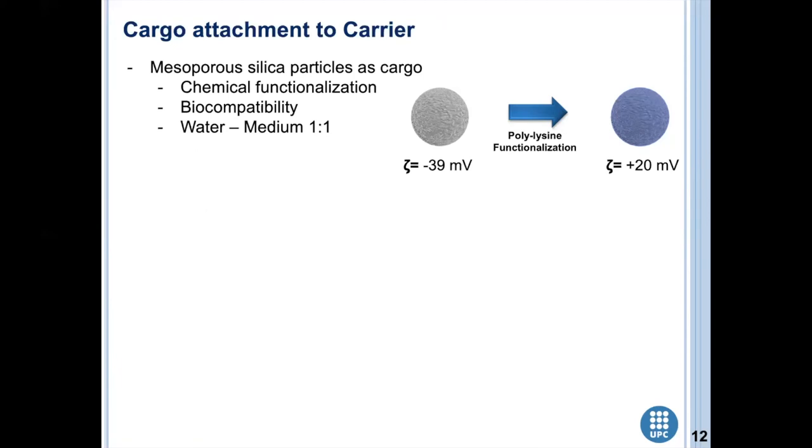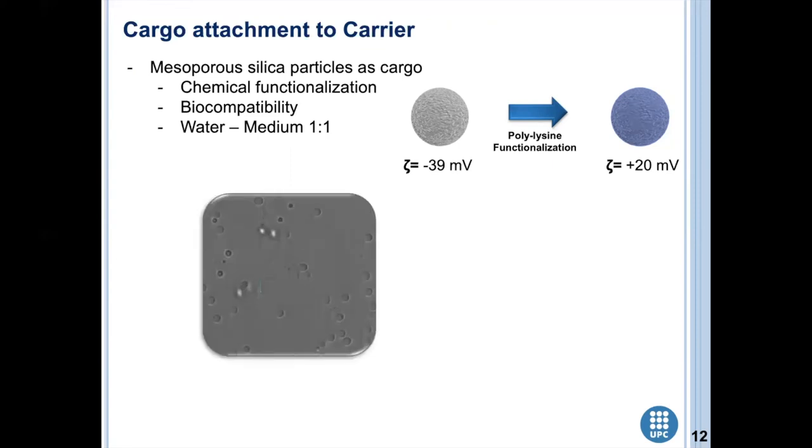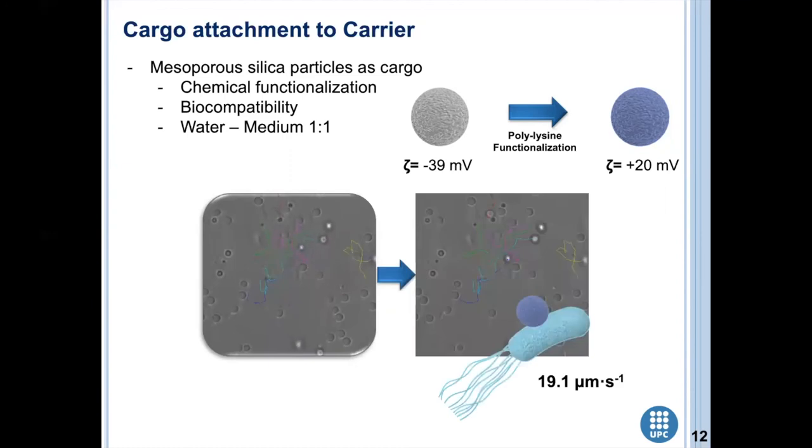Then after the incubation of these particles with the conditions previously mentioned, it was observed different cases of attachment on the swimming of bacteria, therefore the assembly of bacteria bots. Different swimming tracks were estimated, as shown in this image, with an average velocity around 19.1 microns per second for these systems.